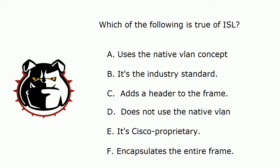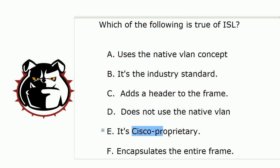If we look at A and D, both of those can't be right because one says it uses the native VLAN and the other says it doesn't. One term I want to make sure you're clear on is 'industry standard.' Cisco proprietary is self-explanatory — it means only Cisco devices can use it. Industry standard is the opposite of that; it means everybody can use it.